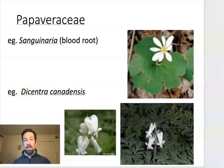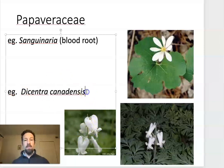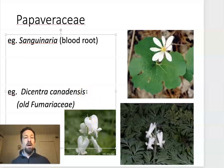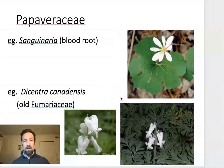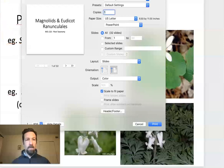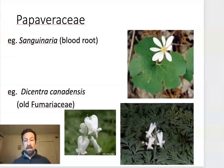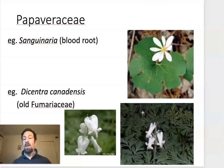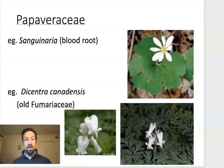The flower pictured at the bottom here is a member of the old Fumariaceae group. Fumariaceae is distinguished from Papaveraceae by the fact that it has bilaterally symmetric flowers, and you can see that really clearly here. Dicentra canadensis is known as squirrel corn — a native wildflower that occurs throughout eastern North America. Also notice the highly dissected leaves, again typical of the family.